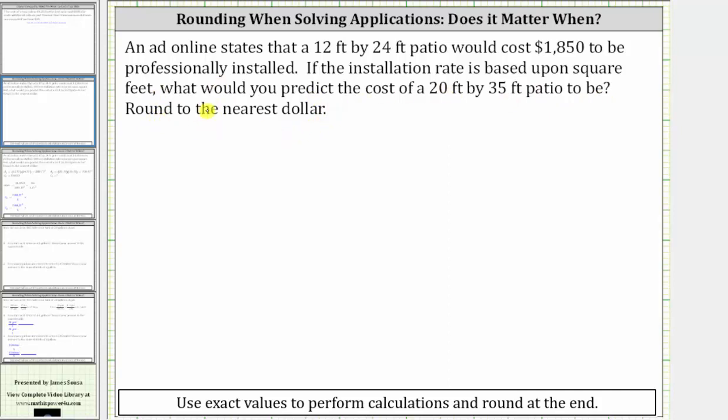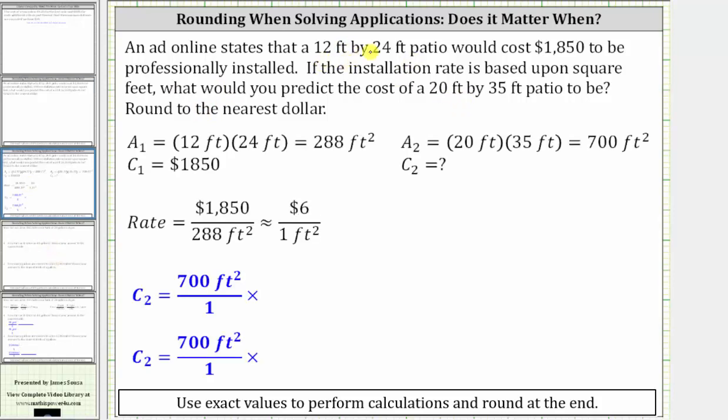Because the cost is based upon the square feet or area, let's begin by determining the area of the two patios. A 12 foot by 24 foot patio, which we will call A sub 1, is equal to 12 feet times 24 feet, which is equal to 288 square feet. And we know the cost of this patio would be $1,850.